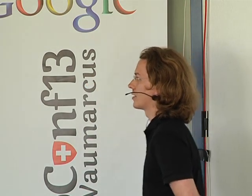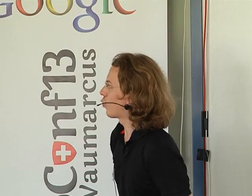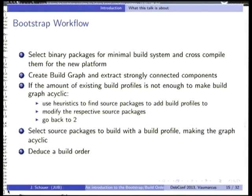What is needed in practice to make it all work is that Debian has some sort of reduced build dependencies or build profiles, as we call them now, and that cross-compilation for at least the base packages works. The bootstrap workflow would be to first select binaries for a minimal build system and cross-compile them. For Ubuntu at least, as Wookie said, that turned out to be rather easy and not involve much dependency analysis. Then you have your base system to start compilation from — just including essential packages and build-essential.